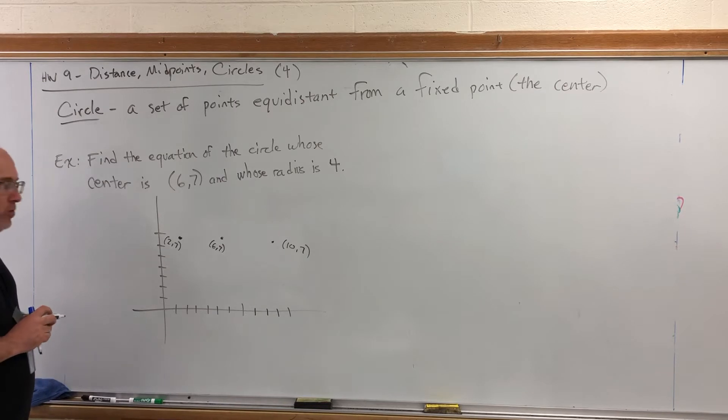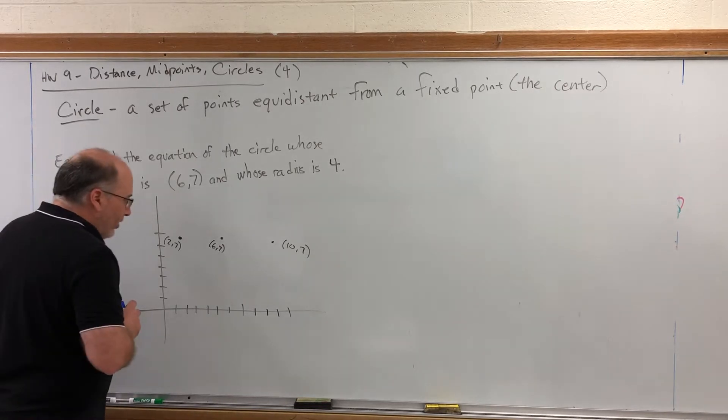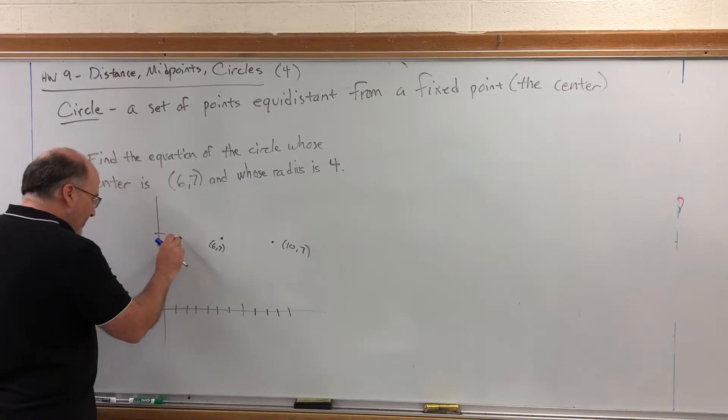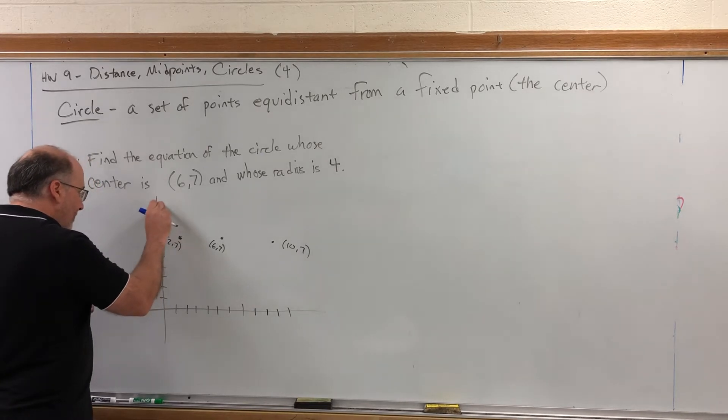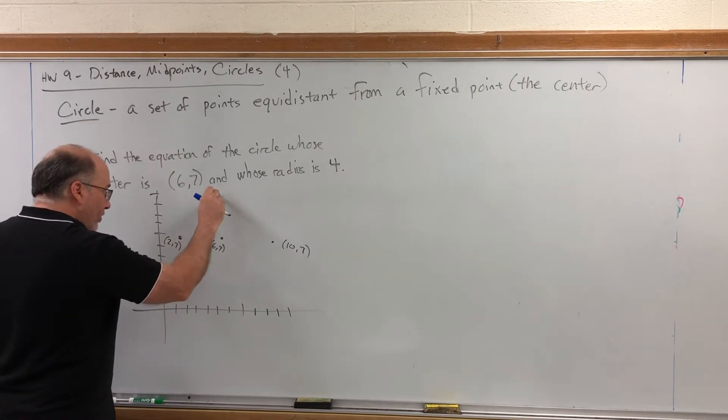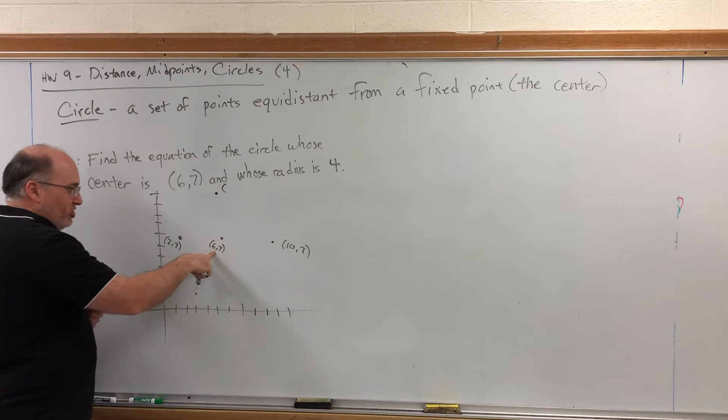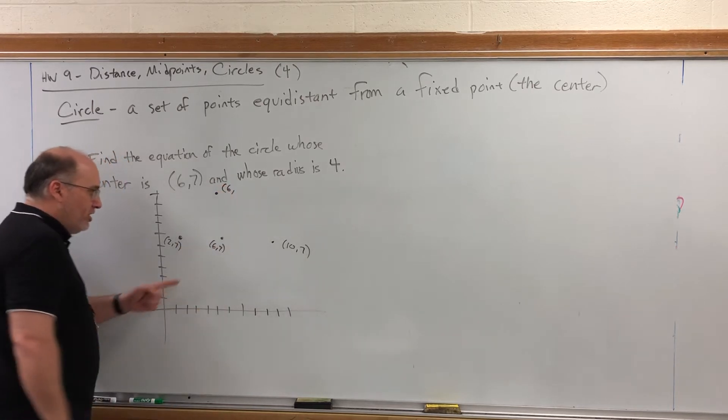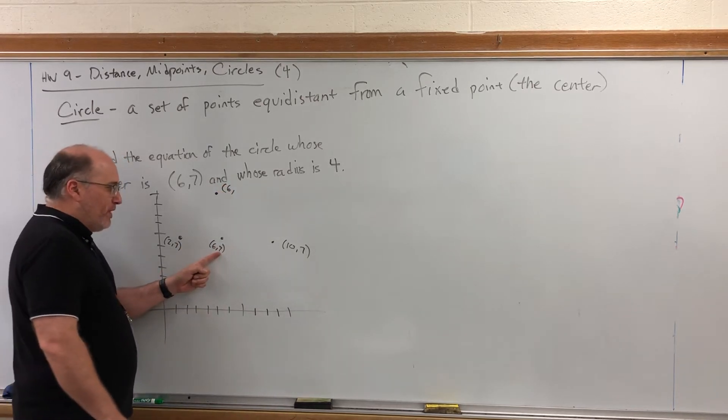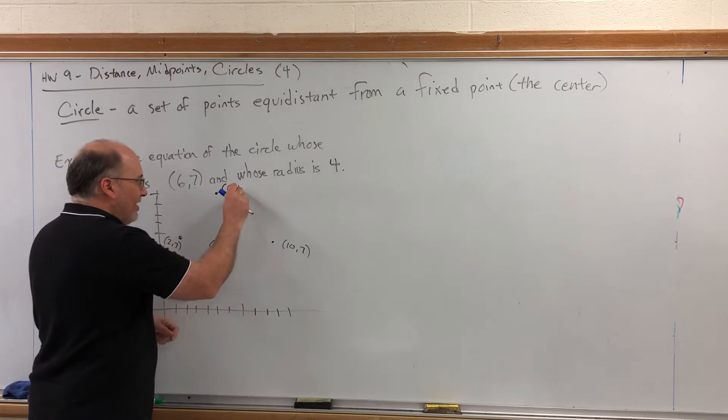So, those are two points in my circle. But let's go up and down as well. If I go up four spaces from the center, my x doesn't change. It's still 6, but my y value just increased by 4. So, 7 plus 4 is 11.